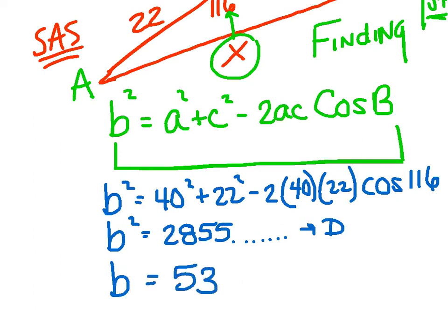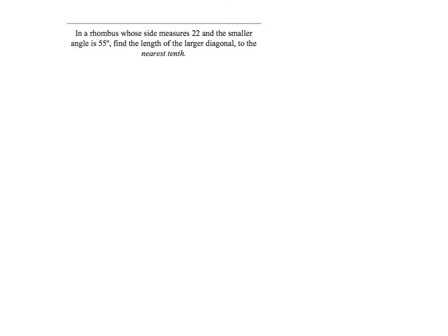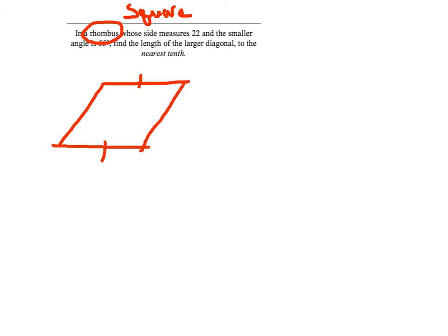And there you have it. The only reason I could type that in is because the variable is already by itself. In our next example, we've talked parallelogram — now let's review rhombus. A rhombus is more like a square; all the sides are equal. It's kind of like a square that got tilted. In a rhombus whose side measures 22 — and they only have to tell you one because they're all equal.